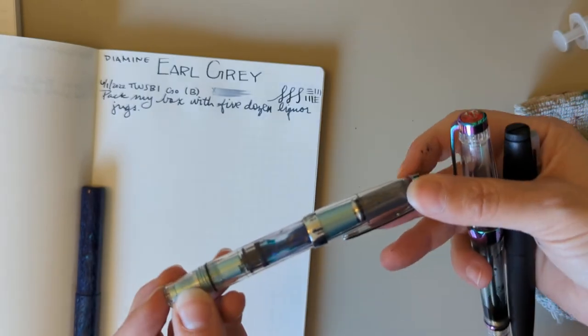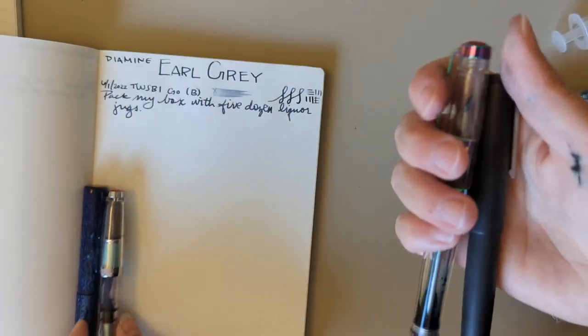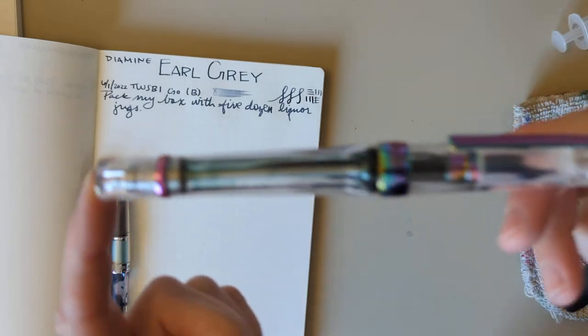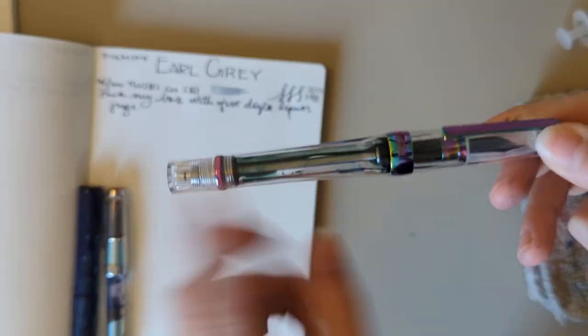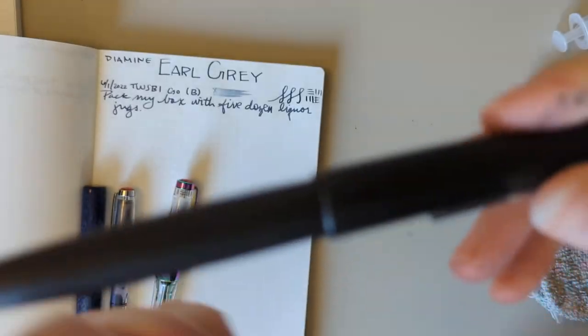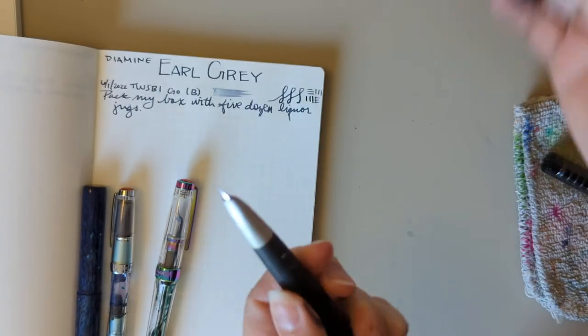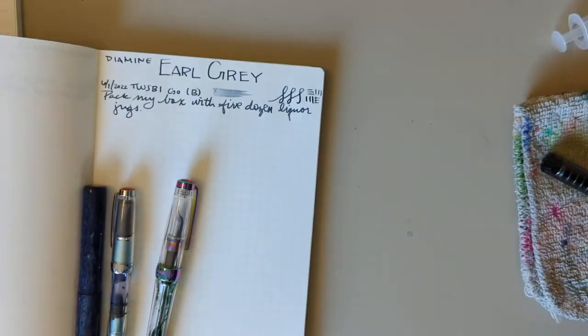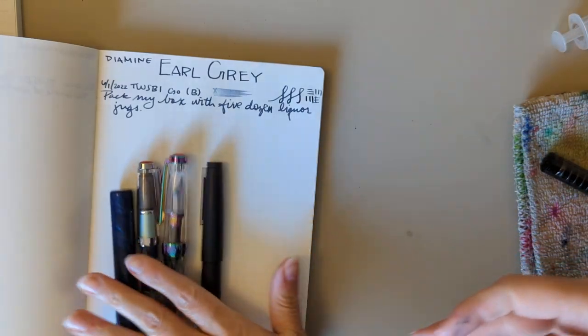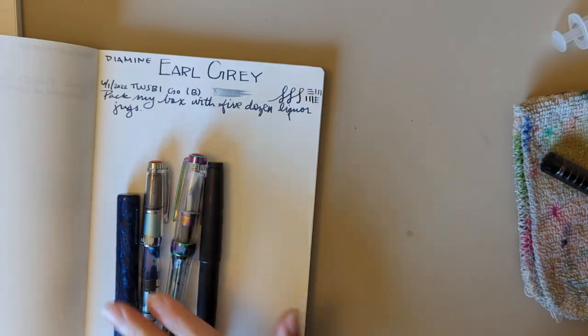I have this, my Vac 700R Iris, and this had Petrichor in it, also almost empty. And then this, of course, my beloved Hello Lamy 2000, and this had KWZ Gummy Berry and it is almost empty also. So good job me.